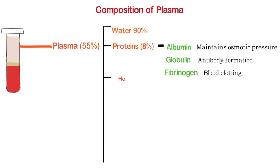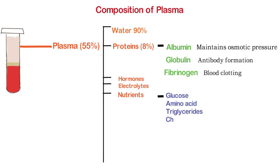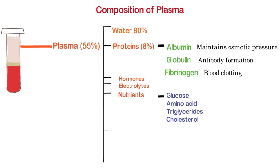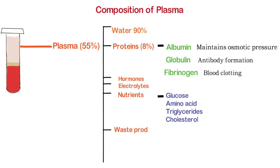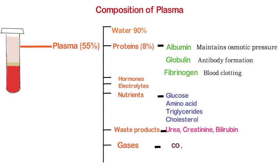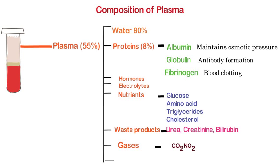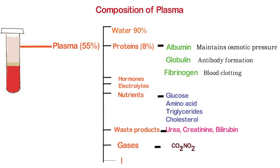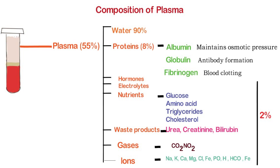Plasma also contains hormones, electrolytes, and nutrients like glucose, amino acids, and cholesterol. Unwanted waste products like creatinine, urea, bilirubin, and gases like carbon dioxide and nitrogen dioxide are also transported through plasma. Sodium, potassium, and magnesium are some of the important ions present here. All these occupy only 2% of the total volume.